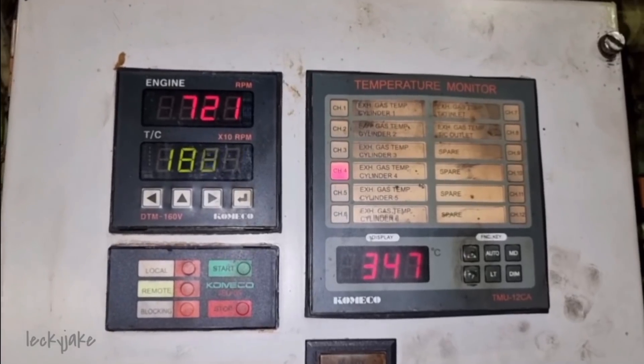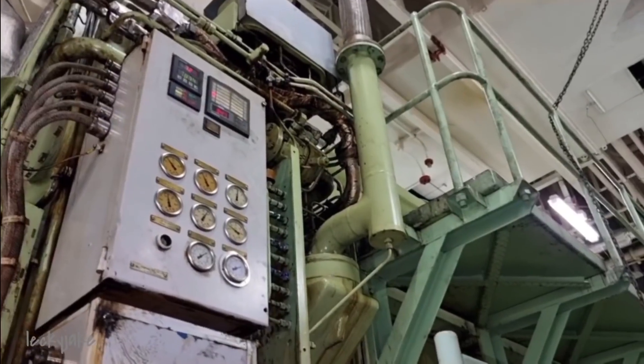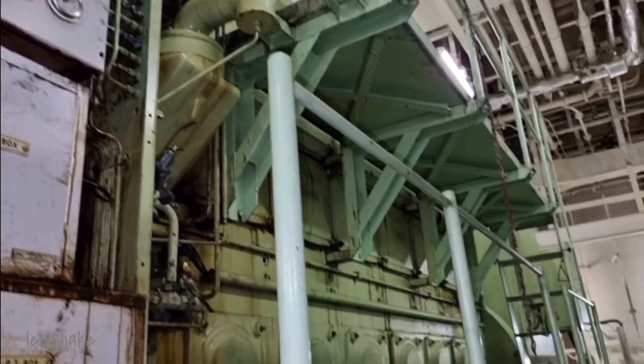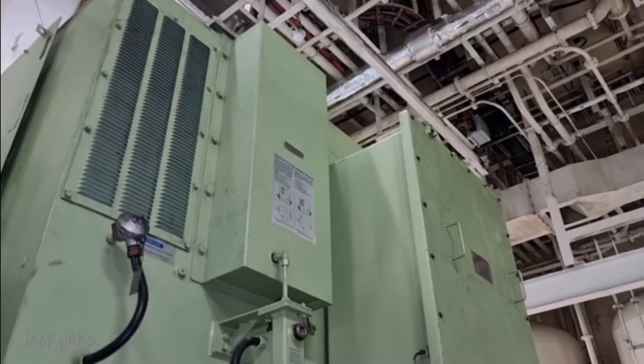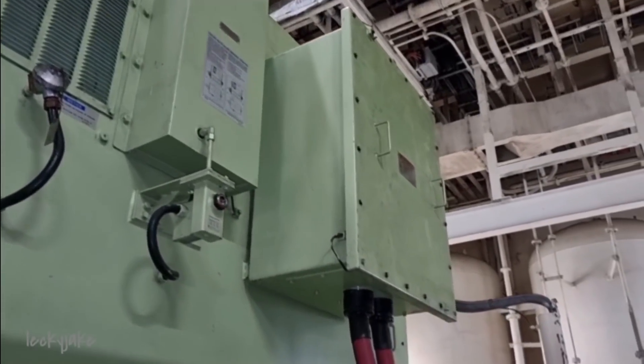Since this is a container ship vessel, the electrical power generating plant on this vessel consists of four generators. These generators are situated in the engine room on the second deck level.